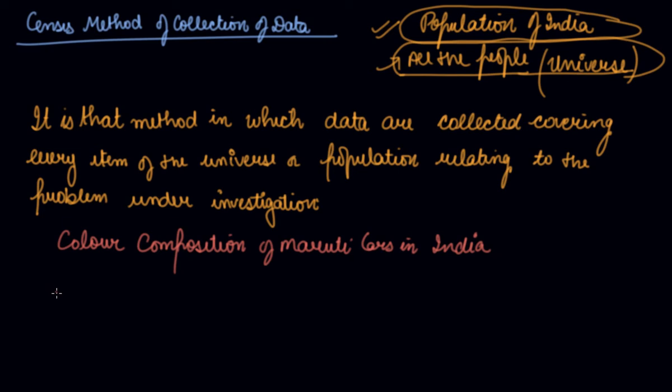Census method implies complete enumeration of the universe or population. Census of population is the most suitable example of census method. That is, population of India. If you have to calculate, which means you have to go house to house and conduct an inquiry about every person living, even at the roadside. You have to find out the population of India. So this is the census method of collection of data.